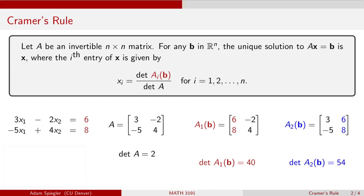And so now that I've calculated these three determinants, Kramer's rule gives us a shortcut to find the solution, namely x₁ is going to be the determinant of A₁(b), which is 40, divided by the determinant of A, which is 2. And x₂ is going to be the determinant of A₂(b), which we found to be 54, divided by the determinant of A, which we found to be 2. So in other words, the solution x here is (20, 27).